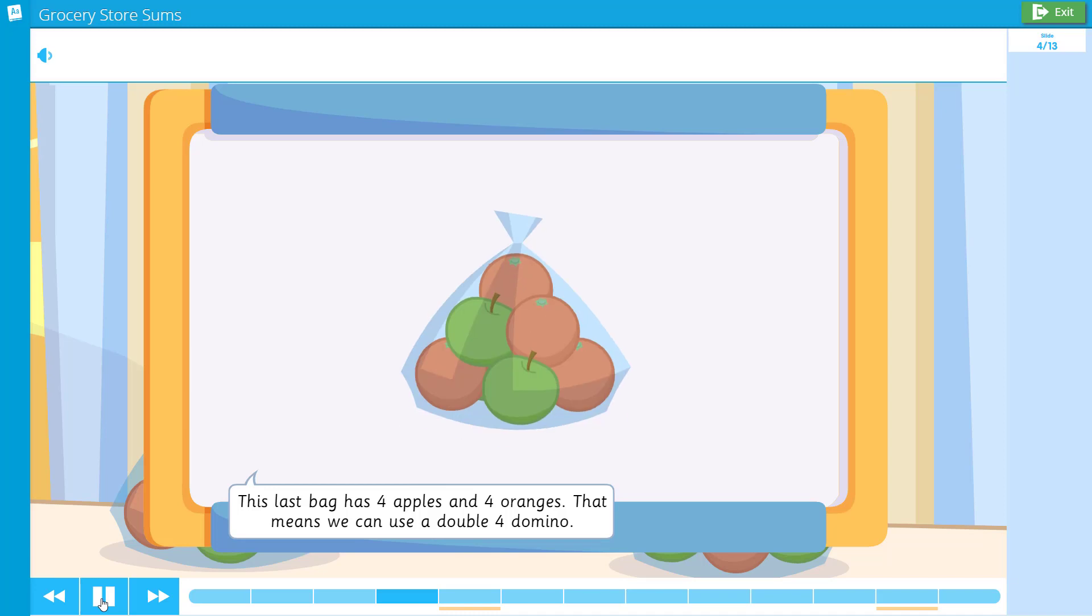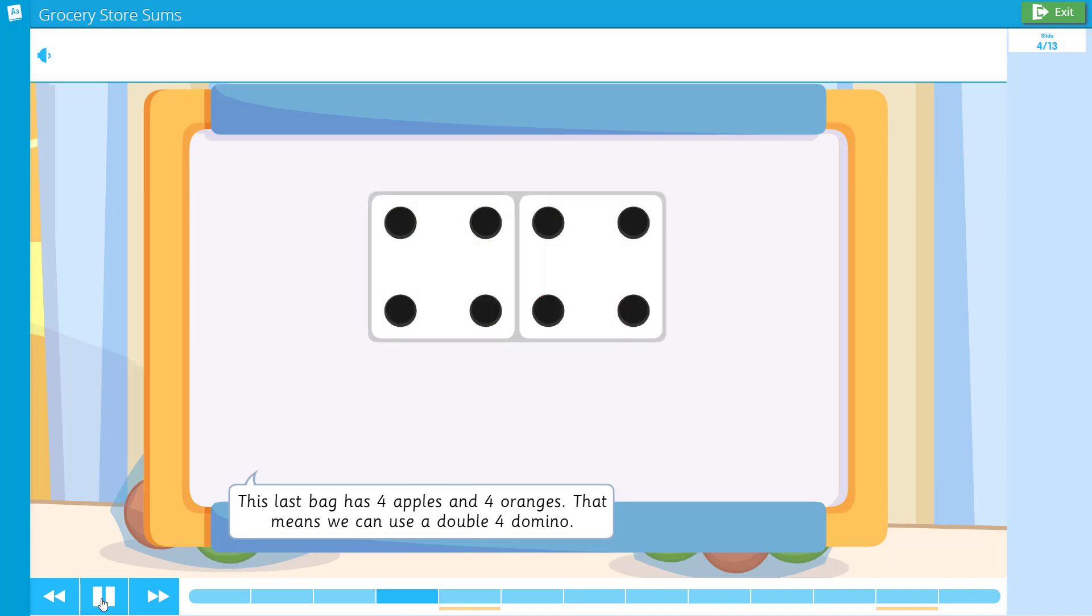This last bag has four apples and four oranges. That means we can use a double four domino. Four and four make eight.